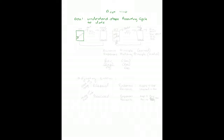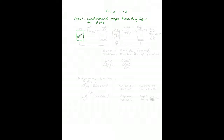The first step of the accounting cycle is to analyze and journalize transactions, and that is done in the general journal. The second step is to post to the general ledger.